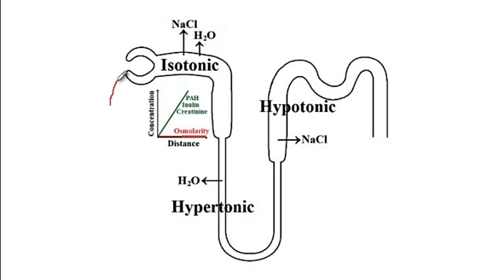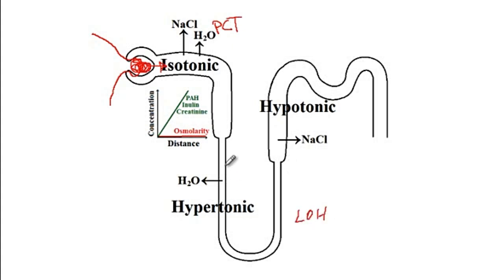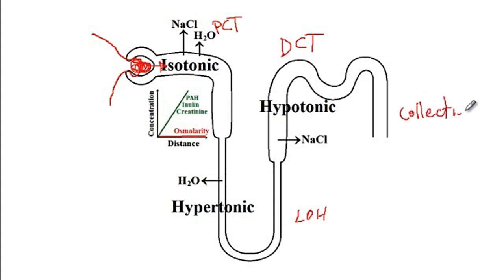Here we have the afferent renal arteriole which goes inside the glomerulus and then the efferent goes out. From here the filtrate will enter the proximal convoluted tubule, then the loop of Henle which divides into the descending limb and the ascending limb, then the distal convoluted tubule, and finally the collecting duct.